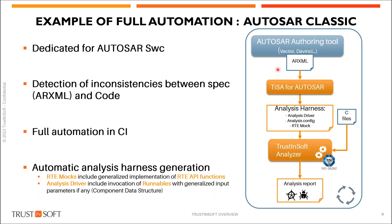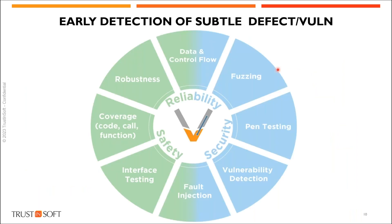Now let me zoom out to the software development process — this is my last slide. You have understood that we detect earlier subtle bugs and vulnerabilities. Normally you need the executable file to do this activity, but with TrustInSoft Analyzer you do a shift left, moving detection of runtime errors and memory safety issues much earlier in the process.